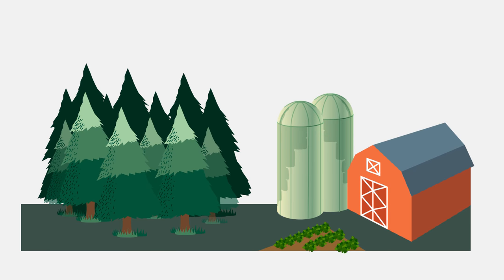Ecosystem management takes a variety of different forms depending upon the desired goal for the habitat. Two very common types of ecosystem management are forestry and agriculture.